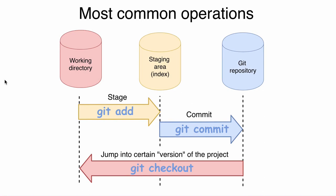In the previous lecture we created one more commit in our git repository, and we used the two most common git operations: adding files to the staging area and committing files to the git repository. Using this diagram, let me explain one more command — git checkout. We will talk about this command in the next section in detail, but for now let me just give you a short overview of it.